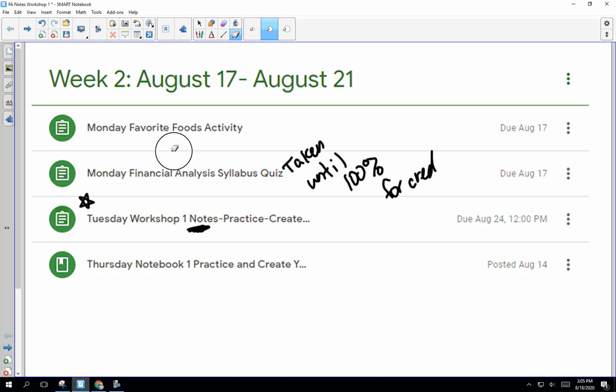So this week, if you completed the Monday assignments, you got credit for attending Monday school. For the syllabus quiz, a lot of folks took it, but didn't get 100%. So I want you to keep taking it until you get 100%. Once you get 100%, I will pop that credit into ARIES for you.